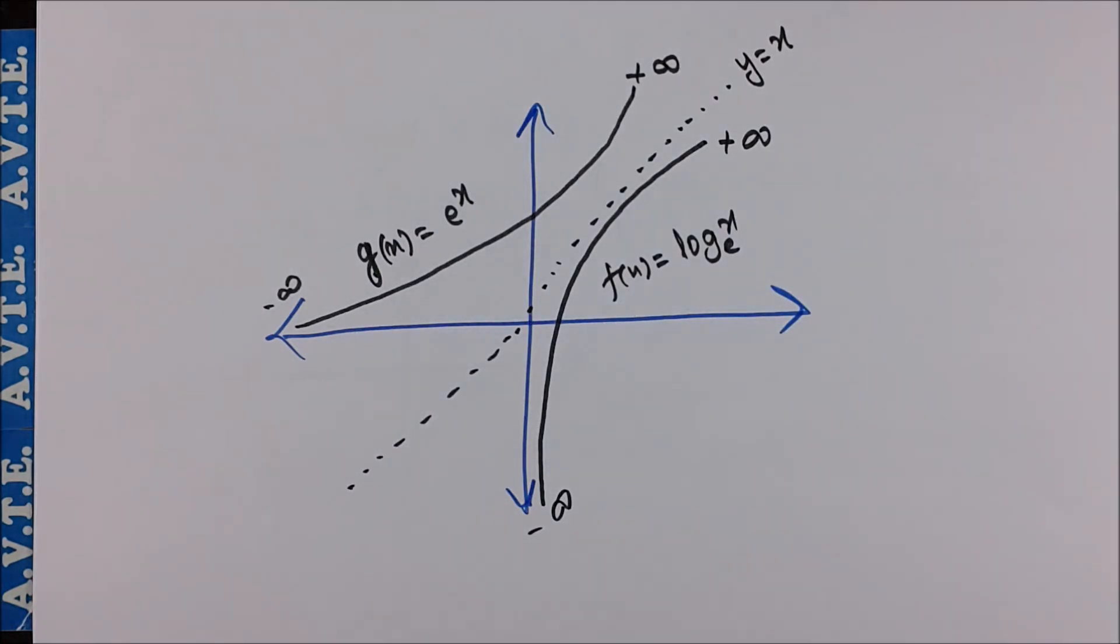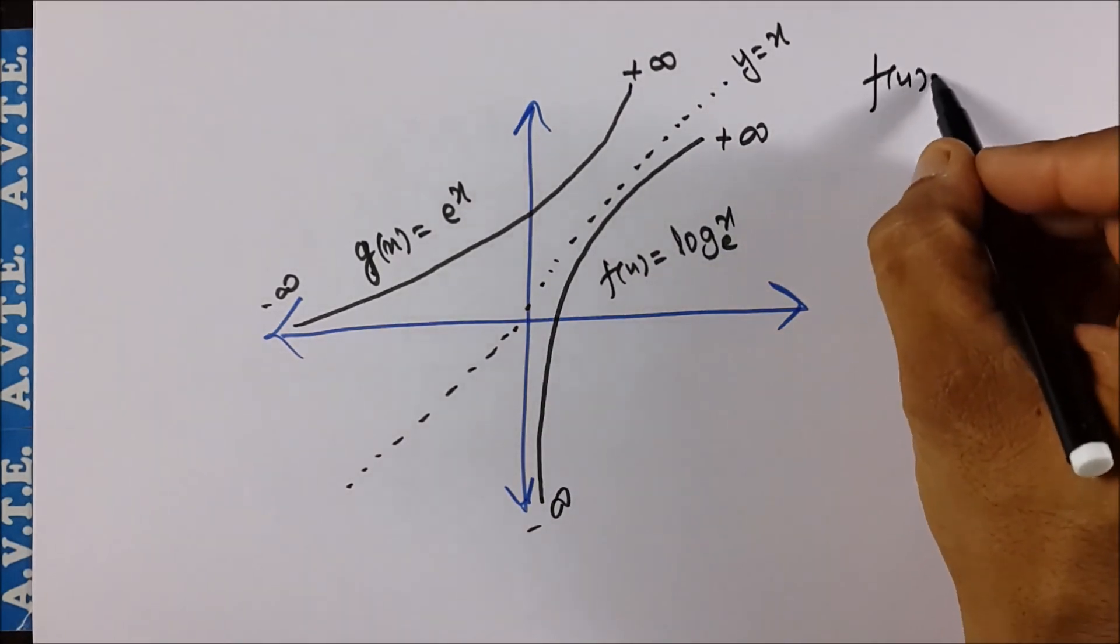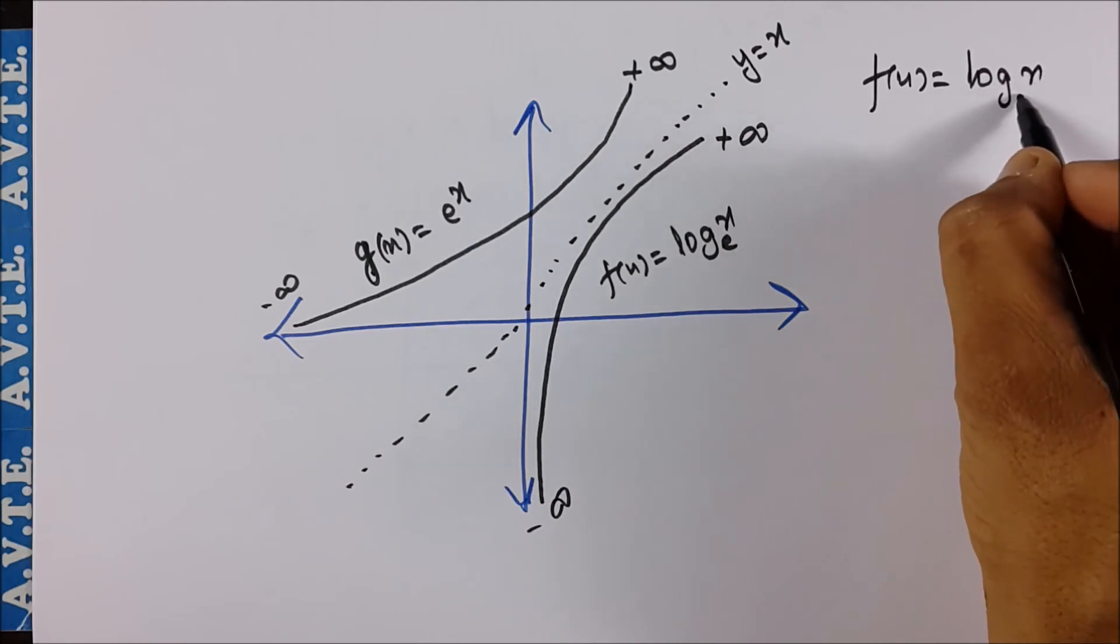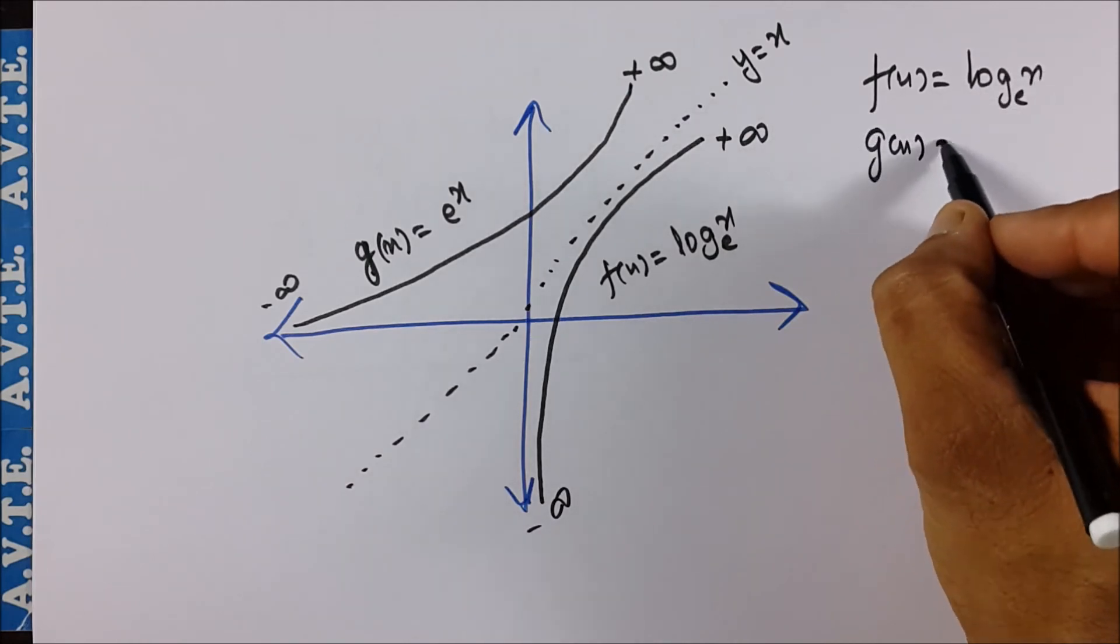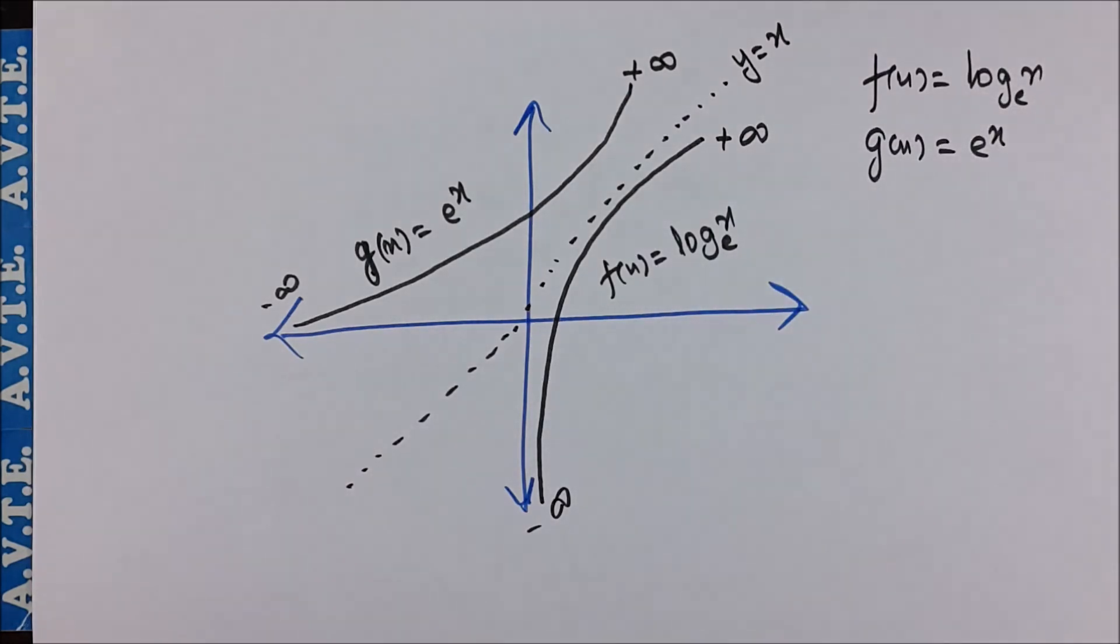And this confirms that they are inverse of each other. So the inverse of log x is e^x and the inverse of e^x is log x. So if f(x) = log x base e and g(x) = e^x, they are inverse of each other.